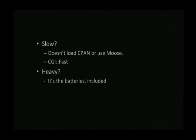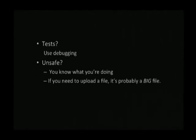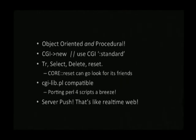Assorted attacks against CGI PM: It's slow. It doesn't load the entirety of CPAN. It doesn't use Moose. And there's also CGI::Fast, which is fast. It's heavy — it's the batteries which are included. Tests. Use debugging. Unsafe — if you really wanted to upload a file, it's probably a big file, you shouldn't be limited. It's both object-oriented and procedural. Certain keywords it injects, if you use the procedural interface, are identical to Perl keywords.